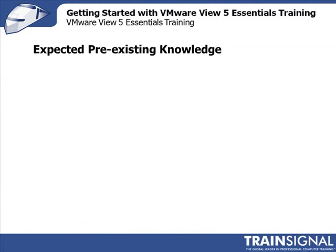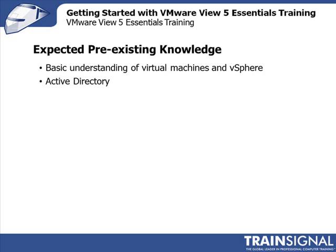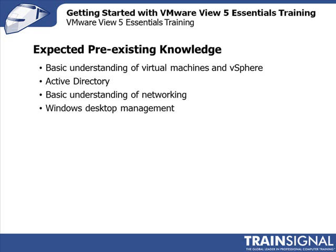What do we expect you to know going into this course? First, you should have a basic understanding of what a virtual machine is and how vSphere manages virtual machines. You'll need to know some things about Active Directory, specifically OU structure and group policy implementations — we won't be creating AD infrastructure, but will be creating OUs and group policies. You need a basic understanding of networking, and some concepts of desktop management, like printing and user management.